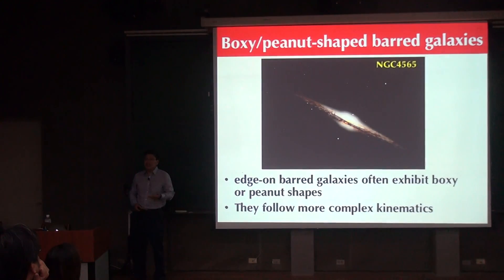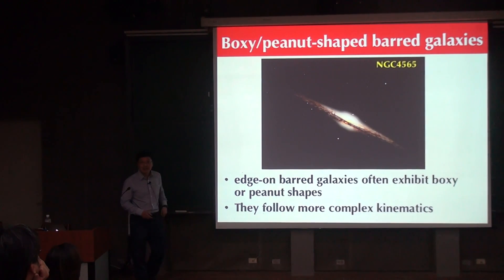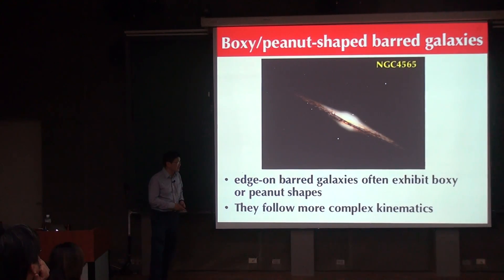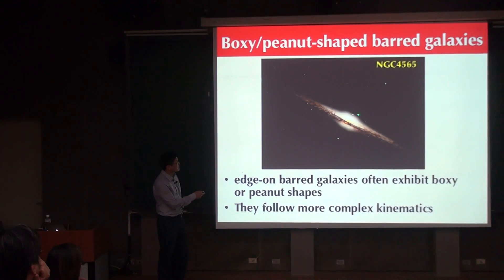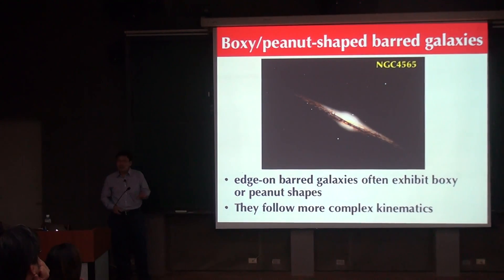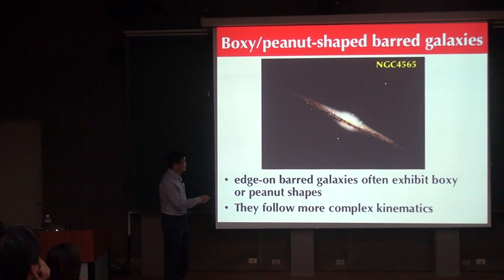When you look at galaxies face-on, it's fairly easy to identify straight bars. But if you look at galaxies edge-on, it becomes much more difficult to identify the central bar structure. This edge-on galaxy has a dark band of dust extinction, and then a central bulge region that appears somewhat boxy — like a box. If you look at the kinematics of stars in these regions, they often appear quite complex.